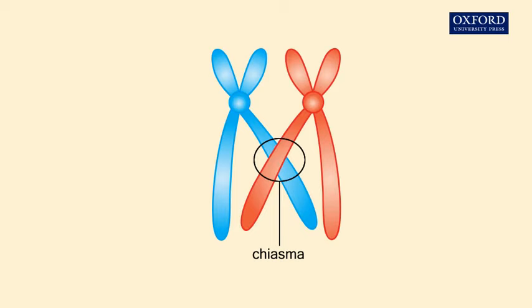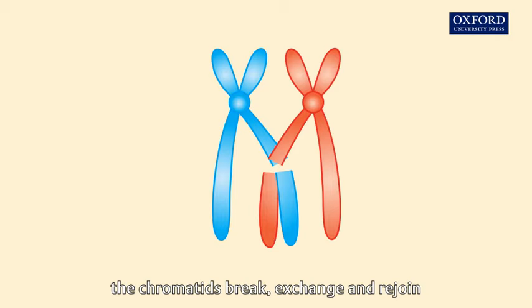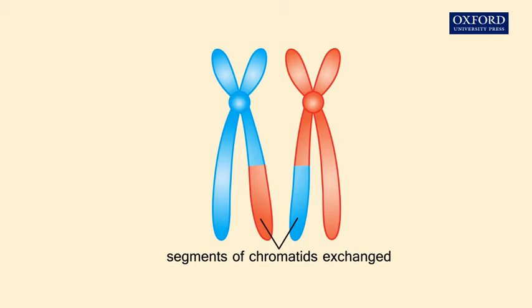At the chiasma, the chromatids break, exchange and rejoin. Crossing over is completed.